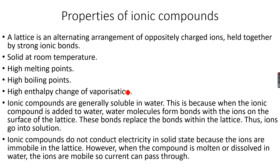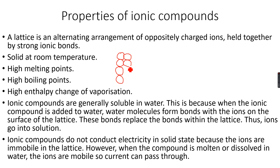One important thing we need to know about ionic bonds is that ionic bonds are very, very strong. When we talk about NaCl, when Na⁺ and Cl⁻ ions come together, they form a structure called a lattice — a three-dimensional, orderly arranged structure.